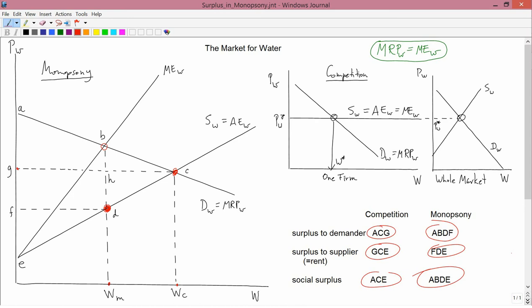Now, looking a little bit at the comparisons, let's look at what the demander gets, the first line of the table, surplus to the demander. Under competition, it's ACG. And under monopsony, ABDF. Actually, it's not easy to tell which is bigger and which is smaller.